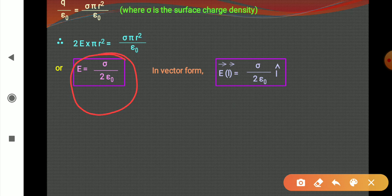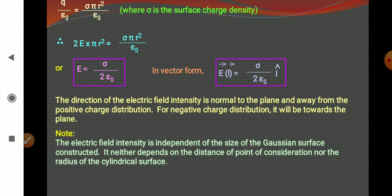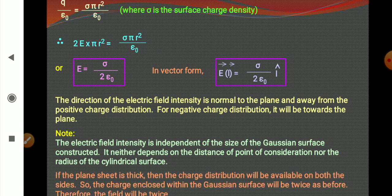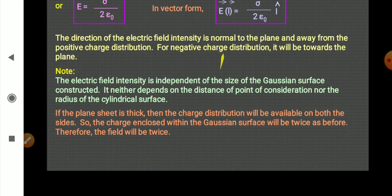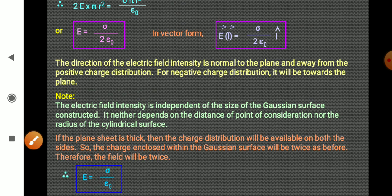An important point: this electric field does not depend on the distance of the point from the sheet. Whether near or far, the electric field is constant because sigma, the surface charge density, is constant. For a uniformly charged infinite sheet, the electric field is the same at 2 cm or 10 cm — independent of the distance. For a thin sheet it is sigma upon 2 epsilon naught, but if the plane sheet is thick, charge is on both surfaces and the electric field becomes twice: sigma upon epsilon naught.